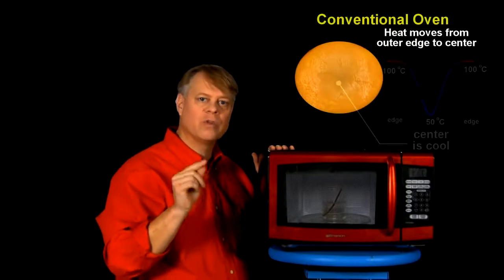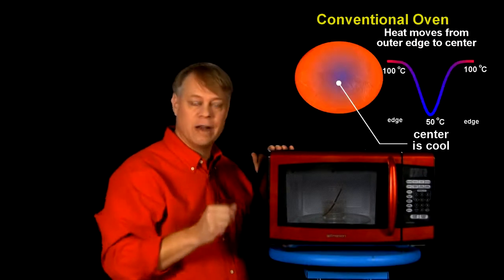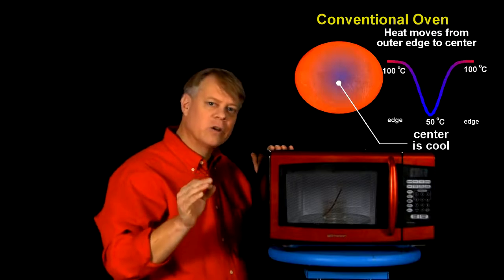In a traditional oven or stove, we heat food by placing a pan on a burner, or in the oven where the walls radiate heat, which cooks the outside of the food. The insides cook when heat transfers from the surface of the food to its interior.